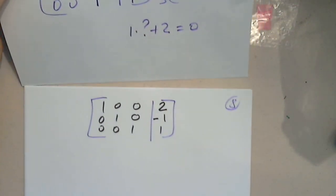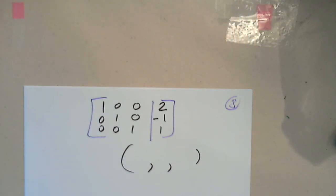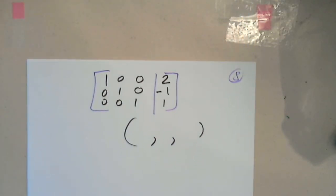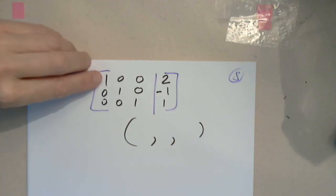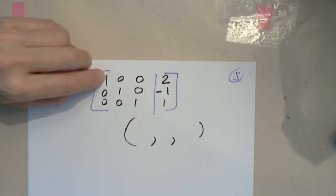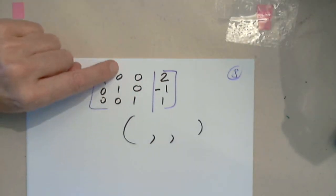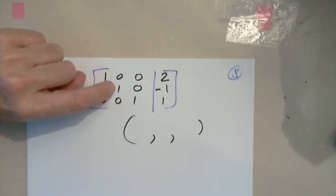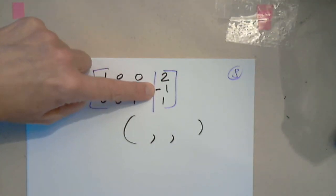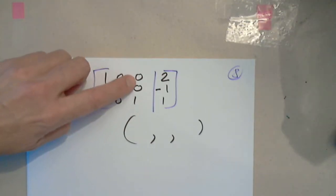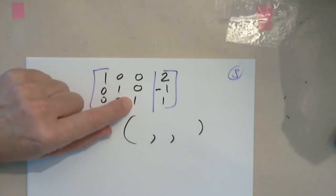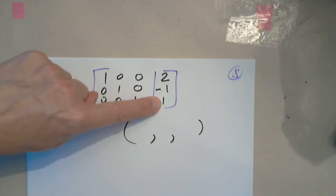Negative 1. That's it. Can anyone right now write the ordered triple — the solution we hope is the solution of the system? We'll check in a minute. 1 represents x, which is 2. This is the column for y. y equals negative 1. And in the column for z there is a 1, so z must be 1.